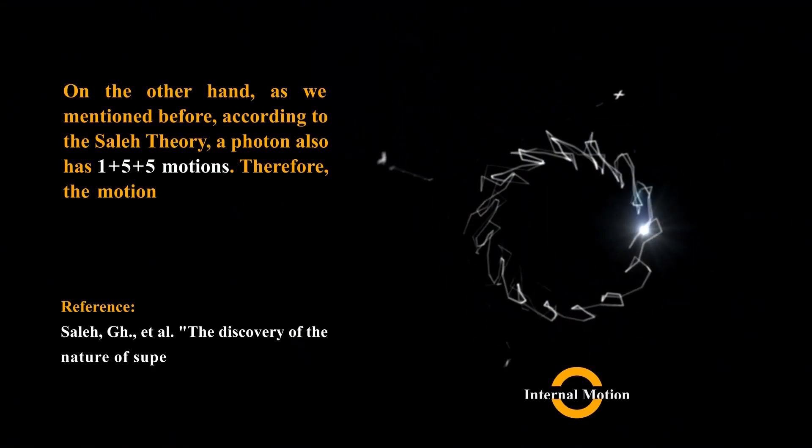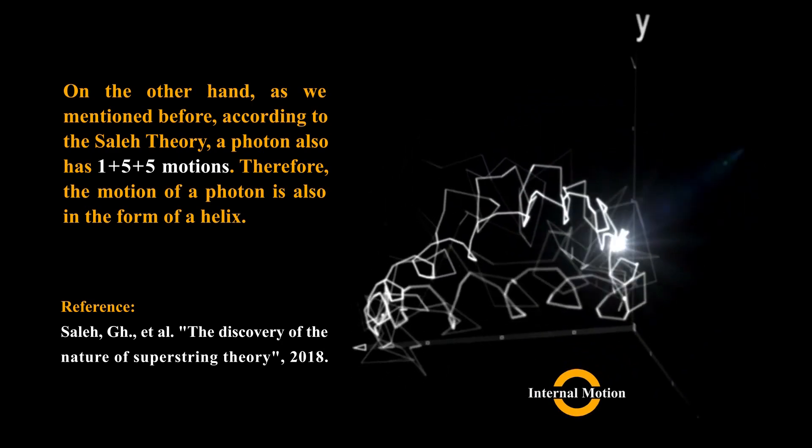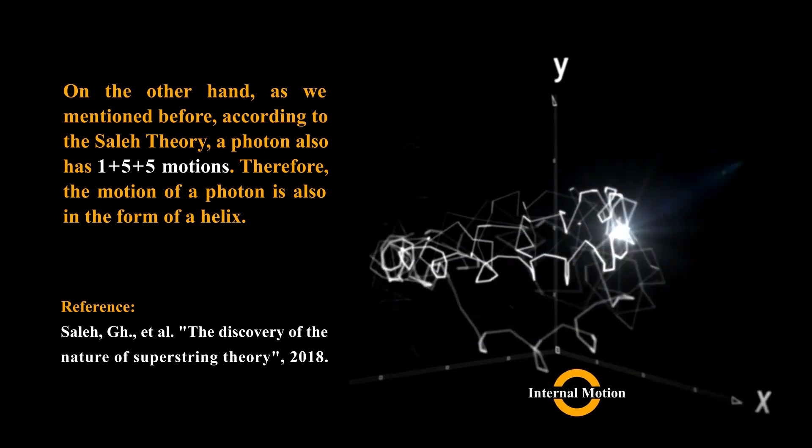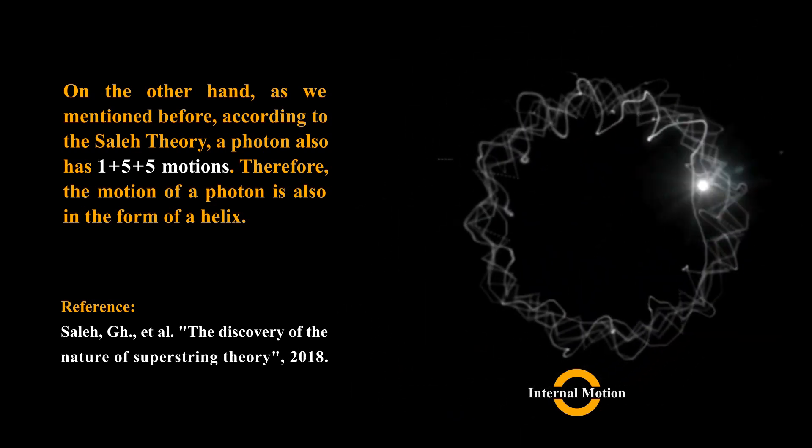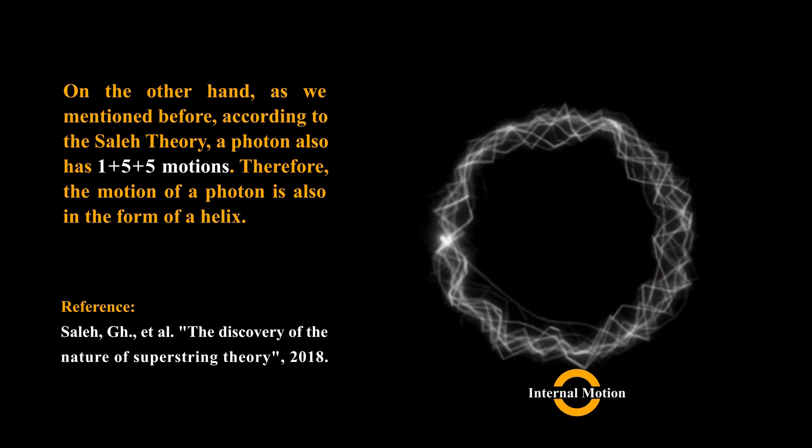On the other hand, as we mentioned before according to the Saleh theory, a photon also has one plus five plus five motions. Therefore, the motion of a photon is also in the form of a helix.